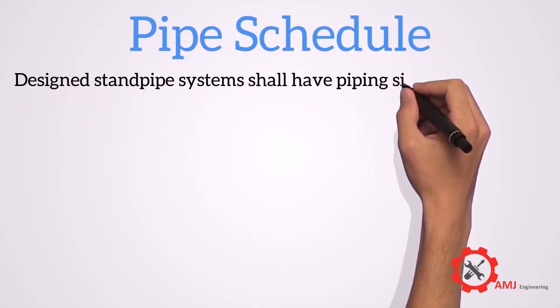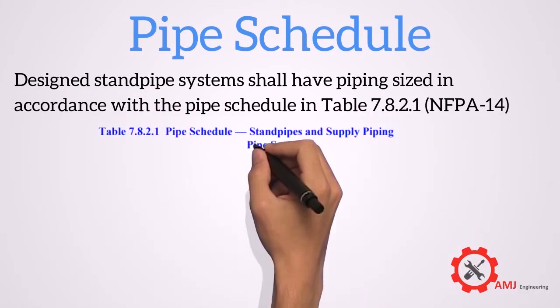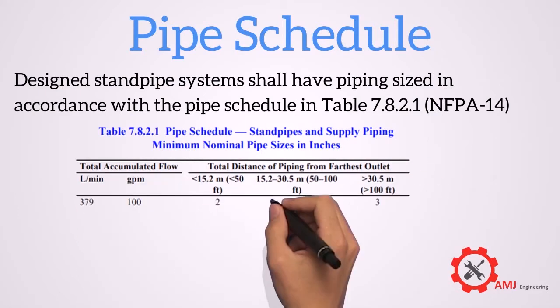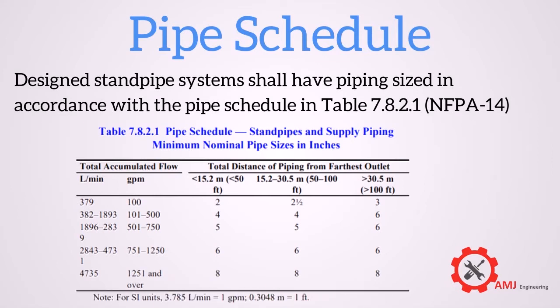The easiest way to size the piping system is to use table 7.8.2.1 below, which was extracted from NFPA 14 2003 edition. From this table, knowing the water flow and the distance from furthest outlet connection, you can select the pipe nominal size.